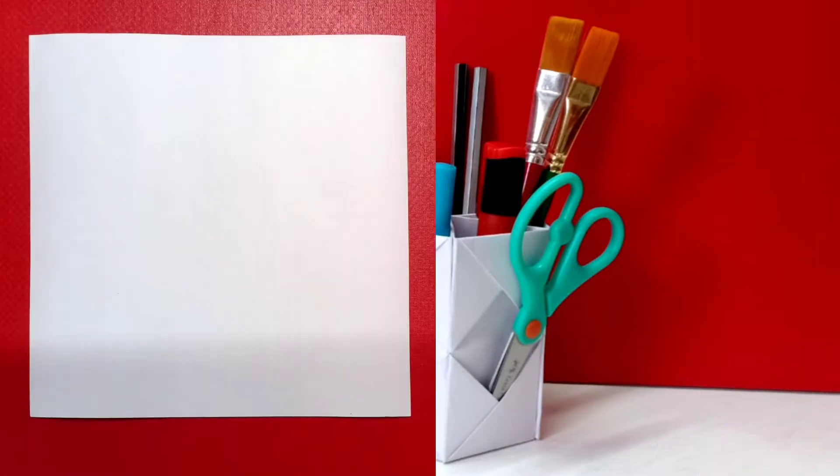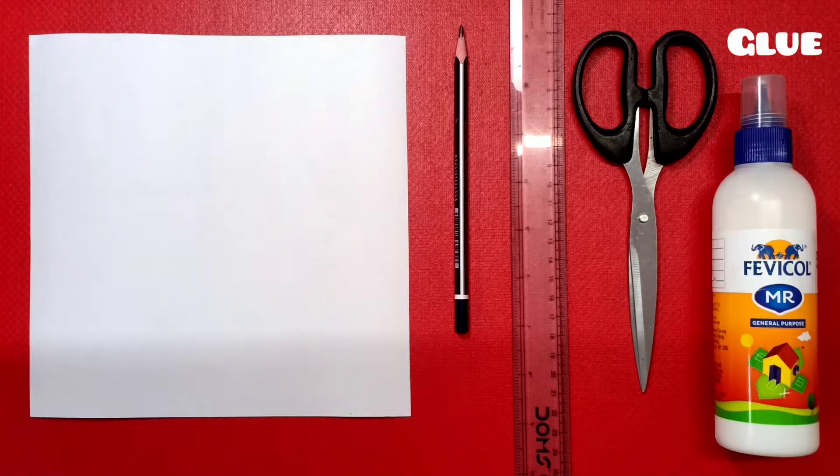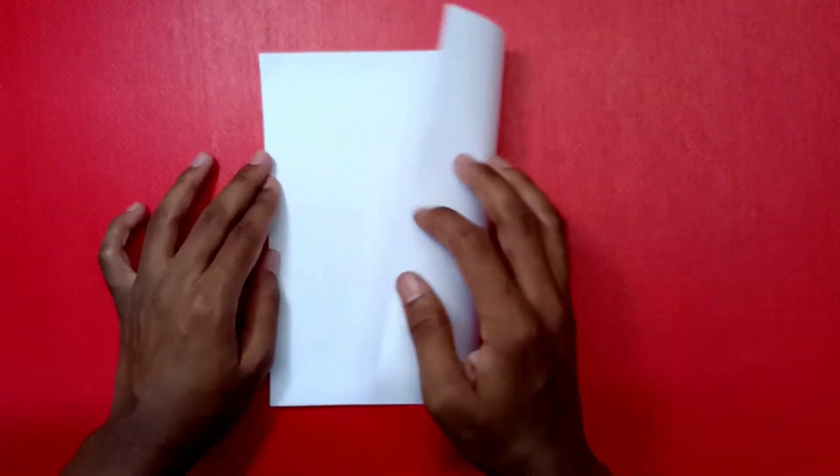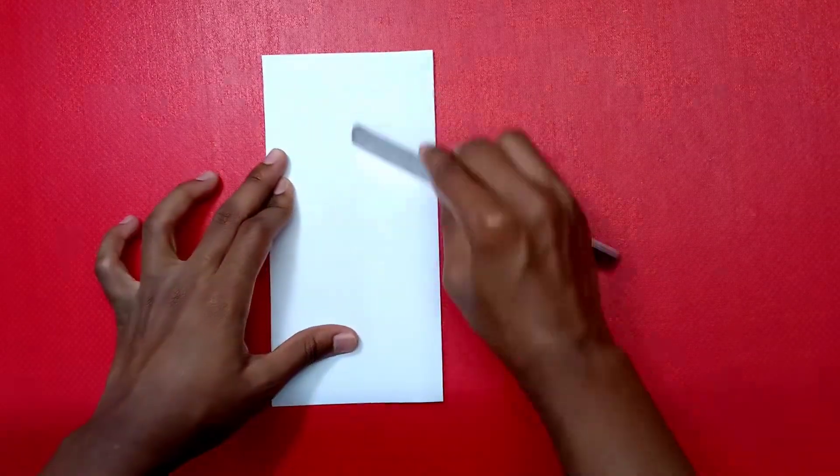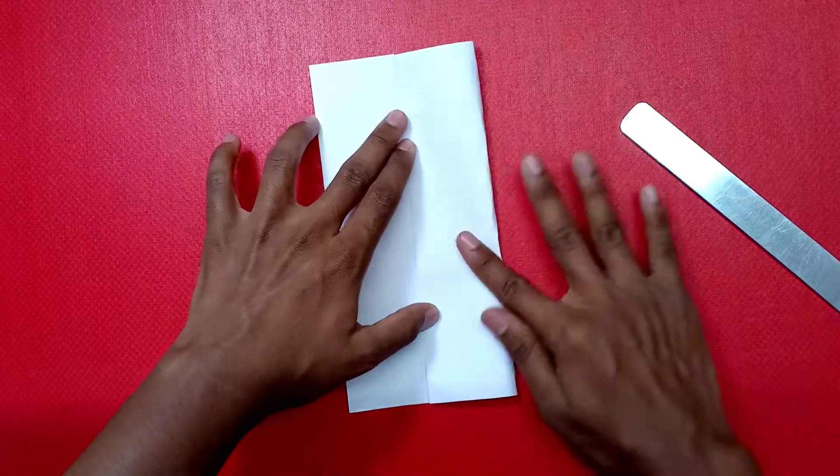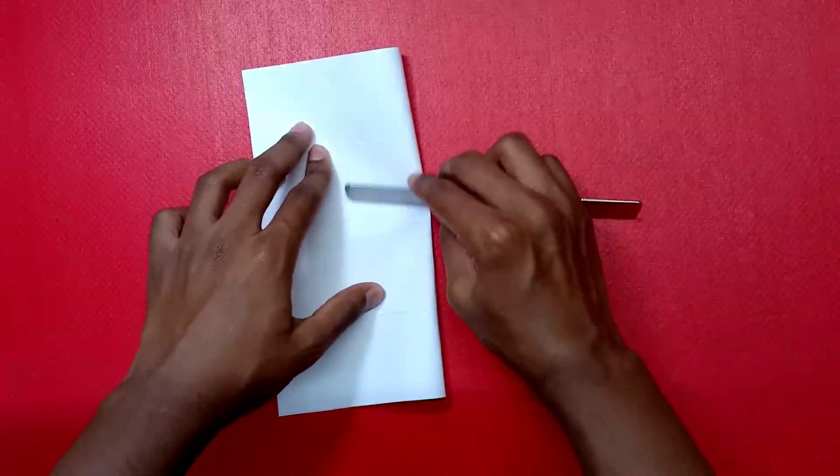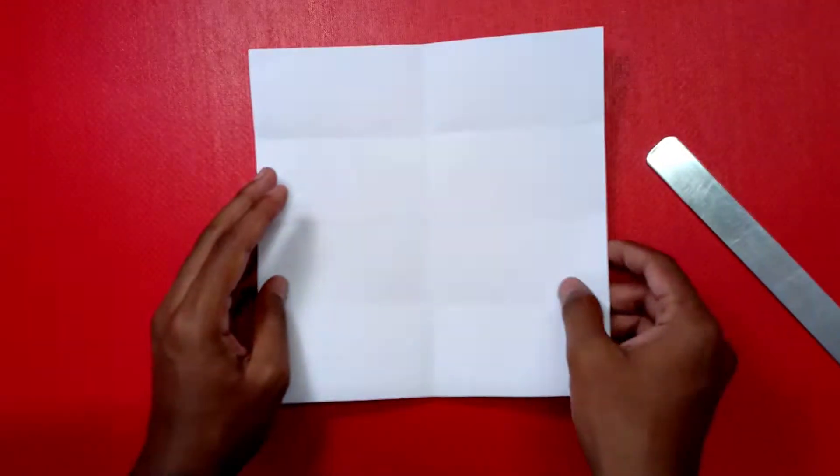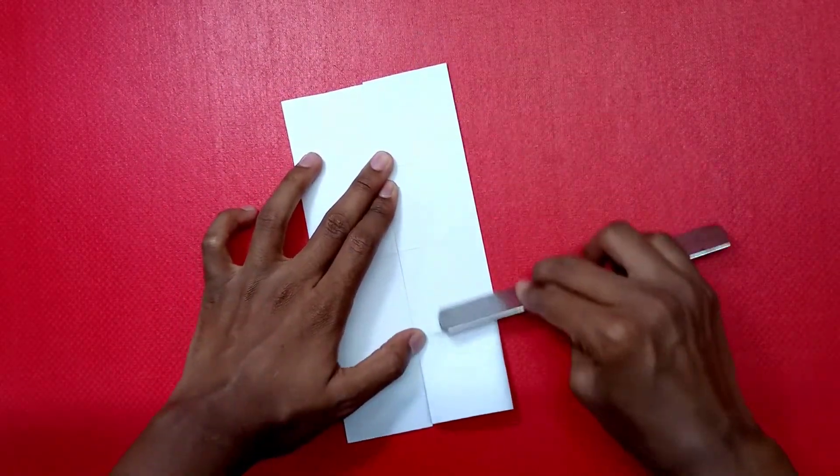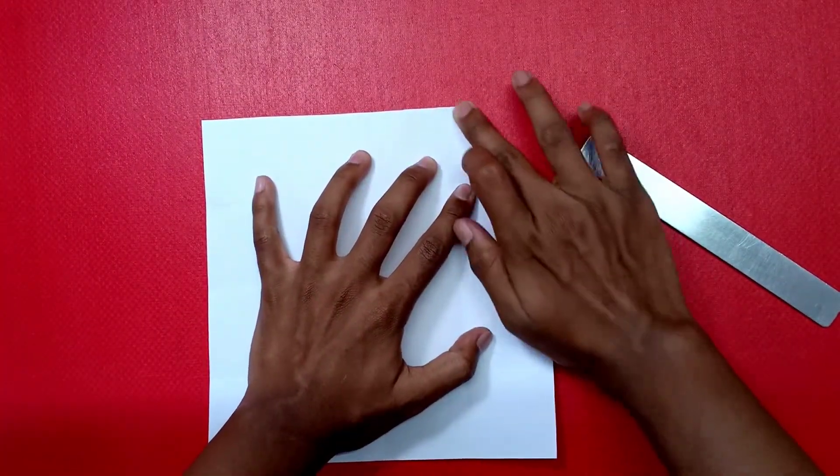For the final DIY, you will need... here I have taken 8x8 inches of paper. Start by folding the paper into half, further fold the sides into half. You will get 4 divisions. Now rotate the paper and fold it into half and again fold the sides into half. You will end up with the grid patterns on the sheet. Now fold all the 4 corners diagonally.